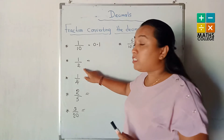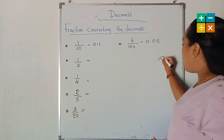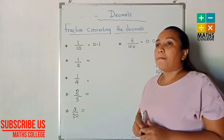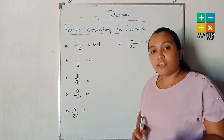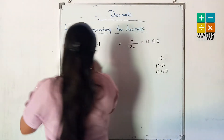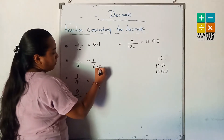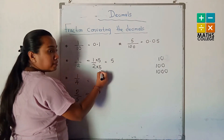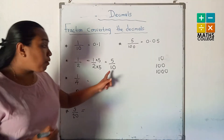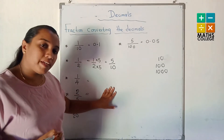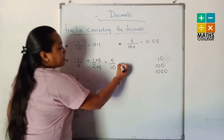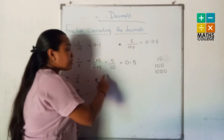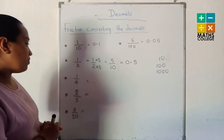Check the first one. The denominator is 2. We can convert 2 to 10 by multiplying by 5 — that is the easy one. Then 1 over 2 multiplied by 5 over 5 gives 5 over 10. The denominator is now a power of 10. It can be written as the decimal 0.5. Since 10 has one zero, the decimal number also has one decimal place.